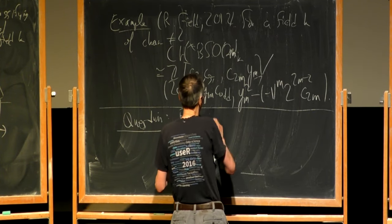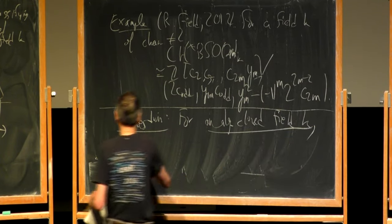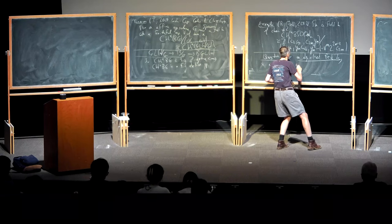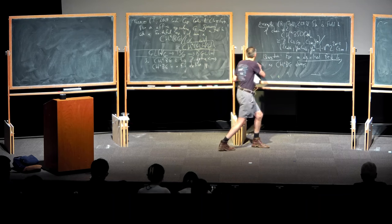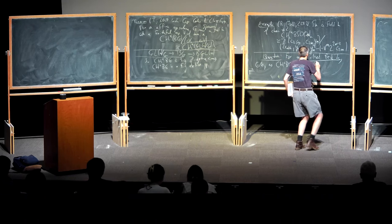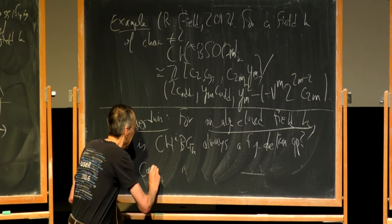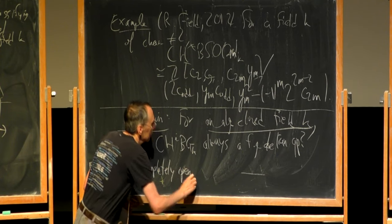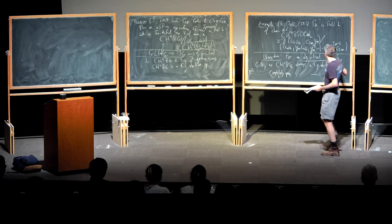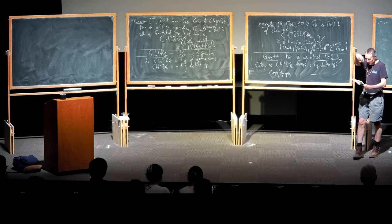For an algebraically closed field, is the Chow ring of BG, for G an algebraic group over K, always a finitely generated abelian group? This is basically completely open. All the examples where we can compute these groups, they are finitely generated abelian groups. But in general we just don't know. What I'm going to describe is that for fields that are not algebraically closed, this is not always true — though you have to consider fields that are rather weird and complicated.